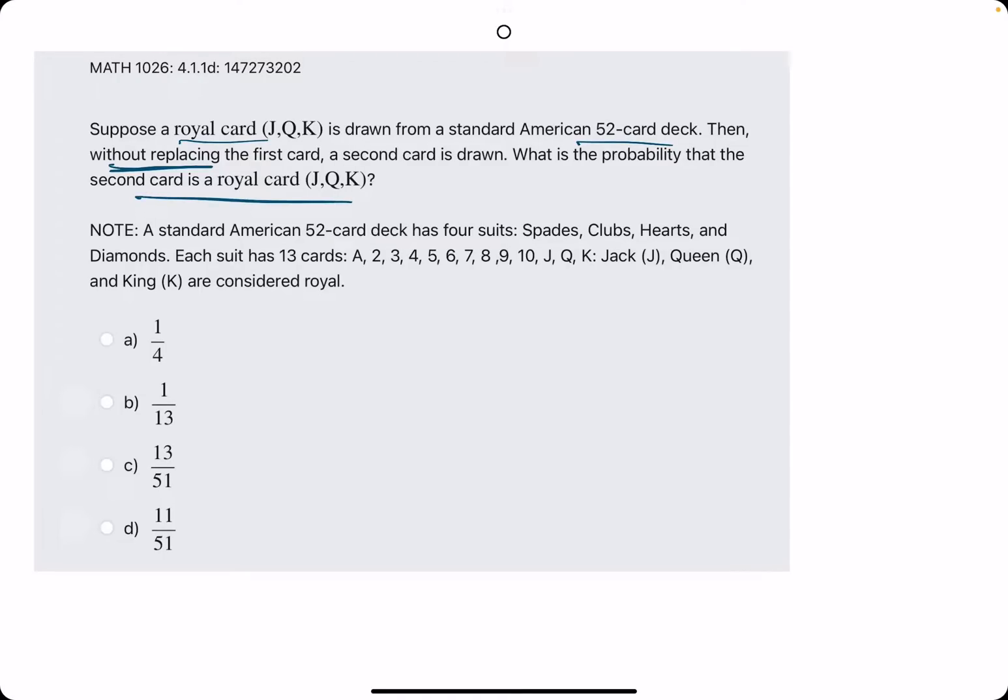So let's talk about what the odds would be if we pulled a royal card the first time. How many royal cards are there? There's a jack, queen, and a king. Therefore, there are three royal cards per suit, and there are four suits. So three options times four suits tells us there were 12 total options or possibilities of drawing a royal card off the start out of the original 52 cards.